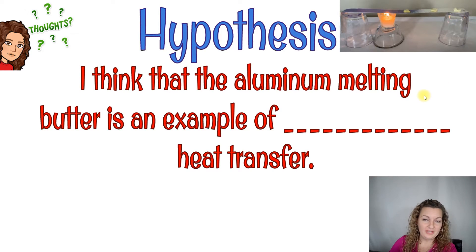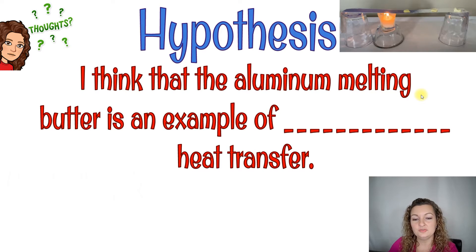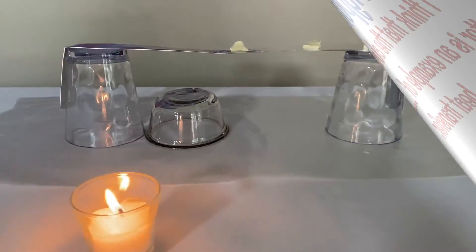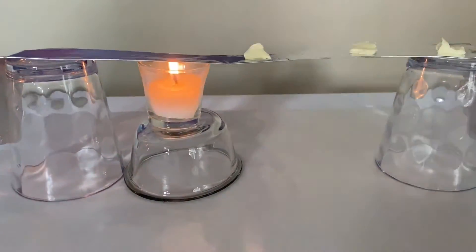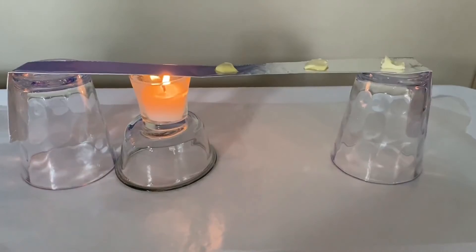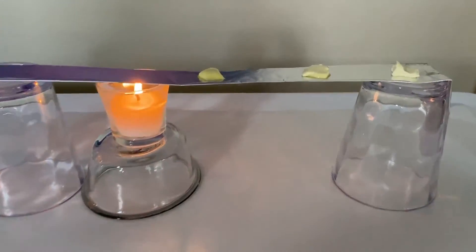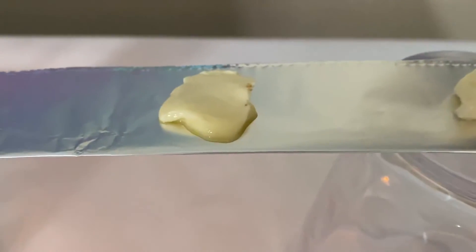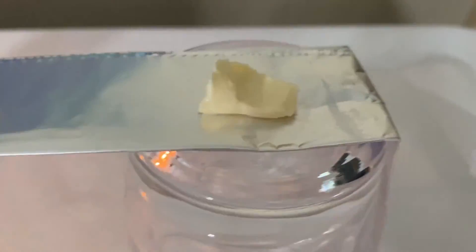Go ahead and answer your hypothesis for this one: I think that the aluminum foil melting butter is an example of blank heat transfer — conduction, convection, or radiation? I'm going to put the candle underneath the aluminum foil; it will begin to heat up. We can see how the butter is melting over time. I'm showing each one up close so you can see the different spots in the aluminum foil and how it is melting at different points.